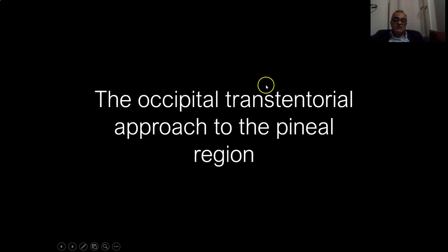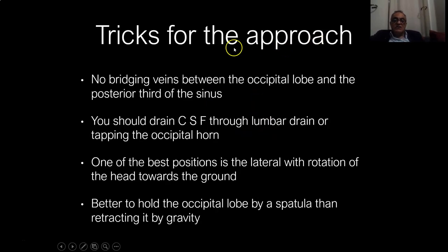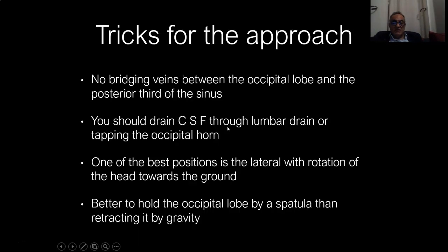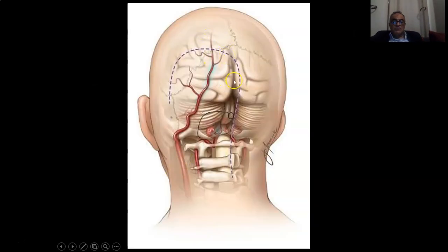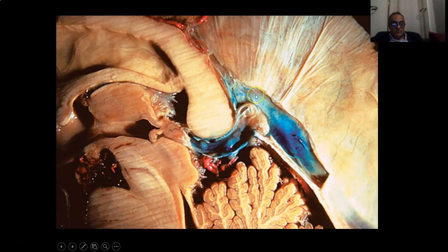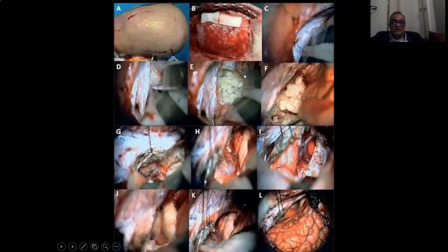The other approach is the occipital transtentorial approach for the pineal region. The patient lies in the lateral position with the head rotated downwards, and you need to drain CSF because you don't have direct access to CSF in this approach — drainage should be by lumbar puncture or a drain. You hold the occipital lobe upwards to prevent herniation by gravity. You use a skin flap and open the bone flap above and below the transverse sinus.